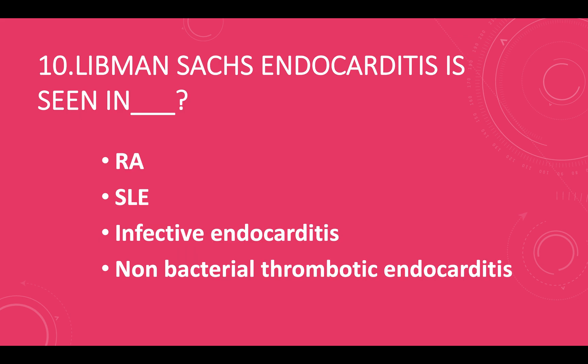Libman-Sacks endocarditis is seen in: option A — rheumatoid arthritis, option B — SLE, option C — infective endocarditis, option D — non-bacterial thrombotic endocarditis. Answer: option B, SLE.